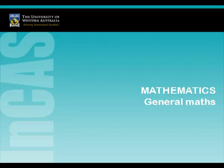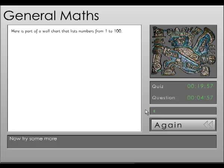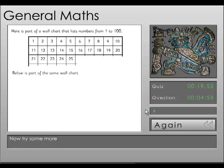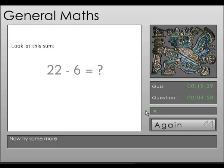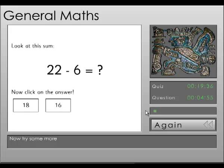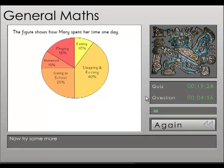General maths requires students to solve mathematical problems. Here is part of a wall chart that lists numbers from 1 to 100. Below is part of the same wall chart. What number should be in the box with the question mark inside? Look at this sum — now click on the answer. The figure shows how Mary spent her time one day. What percent of time altogether did she spend playing and doing homework?